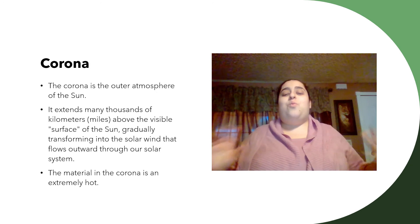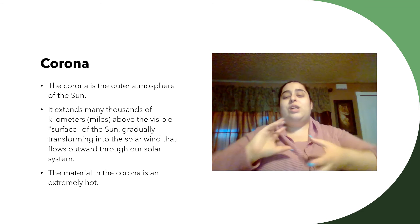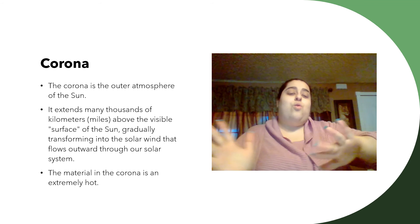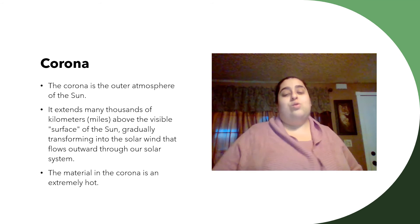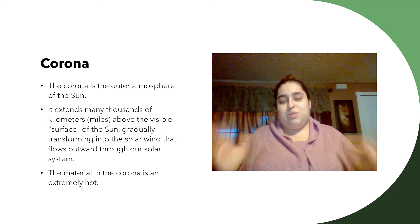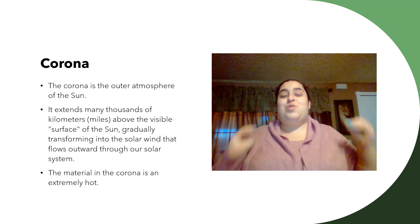Here, we sort of transform it into a solar wind that flows outward through our solar system. Now, the material in this layer is extremely hot. Almost like the plasma of lava. To give you guys more of a reference, it is extremely hot.